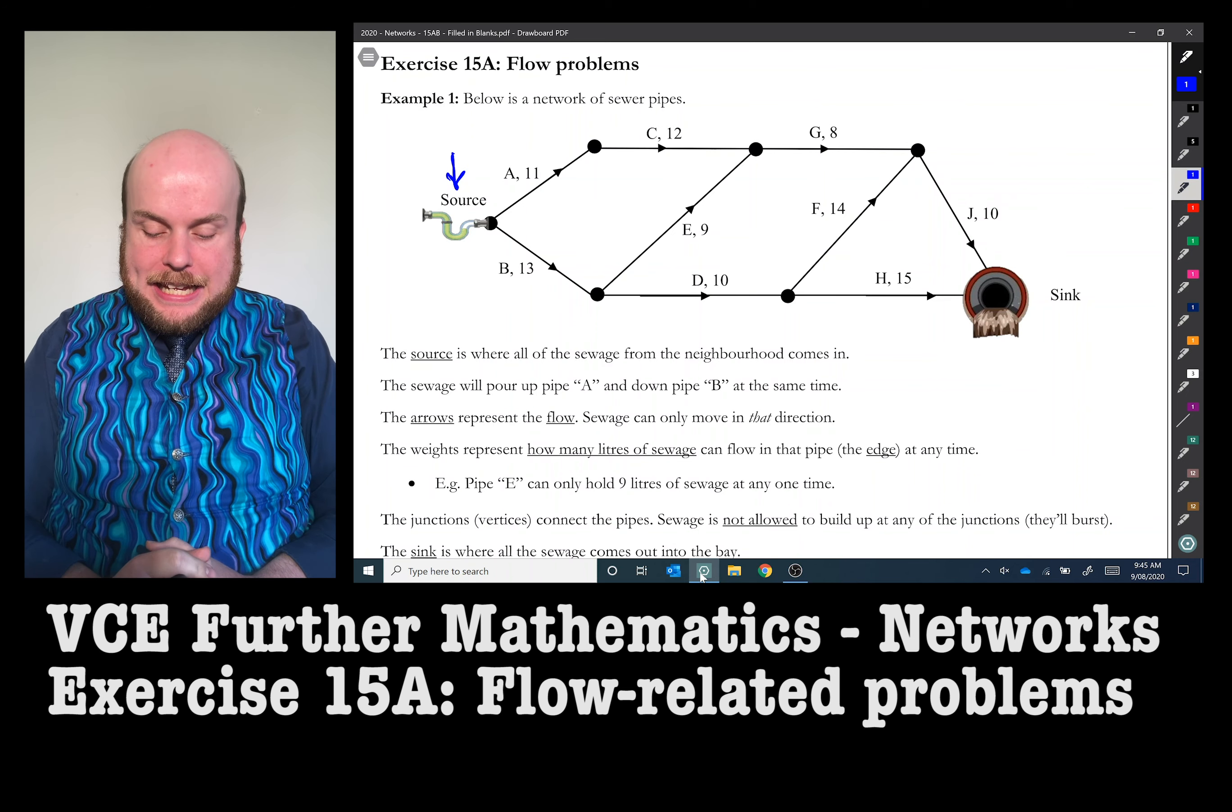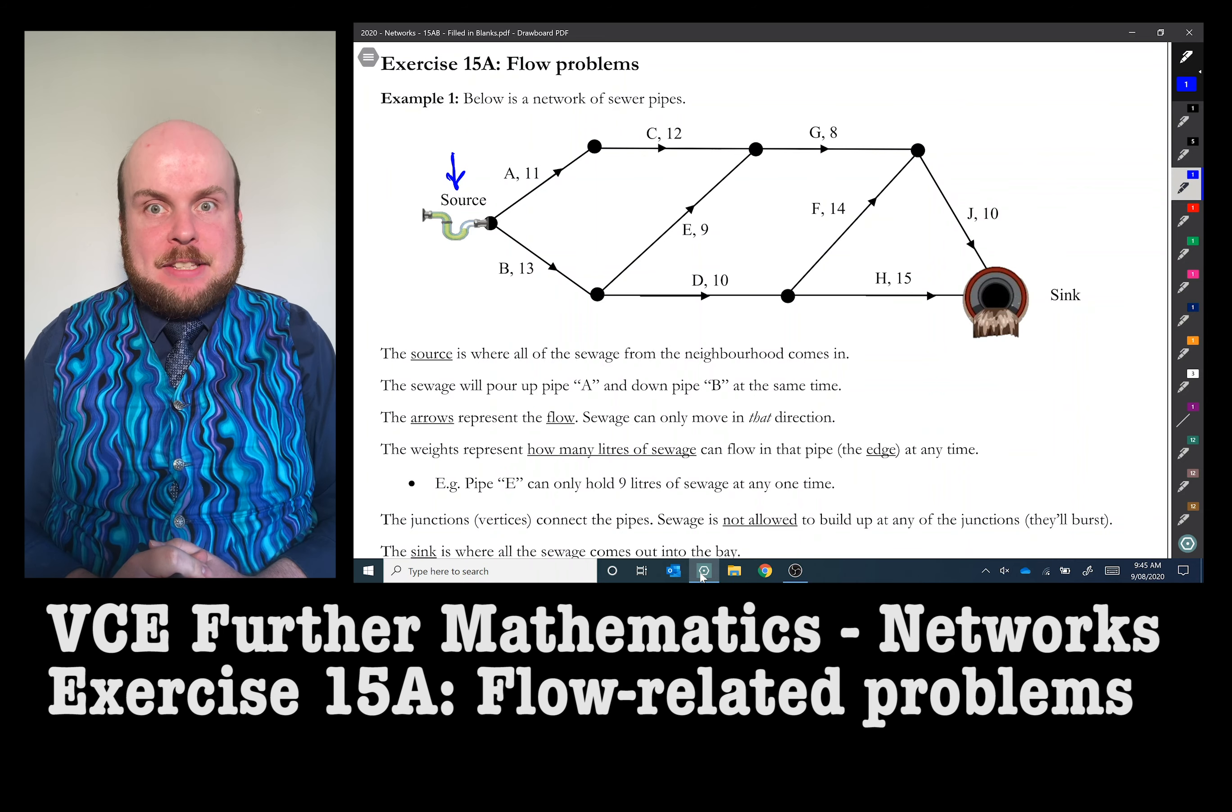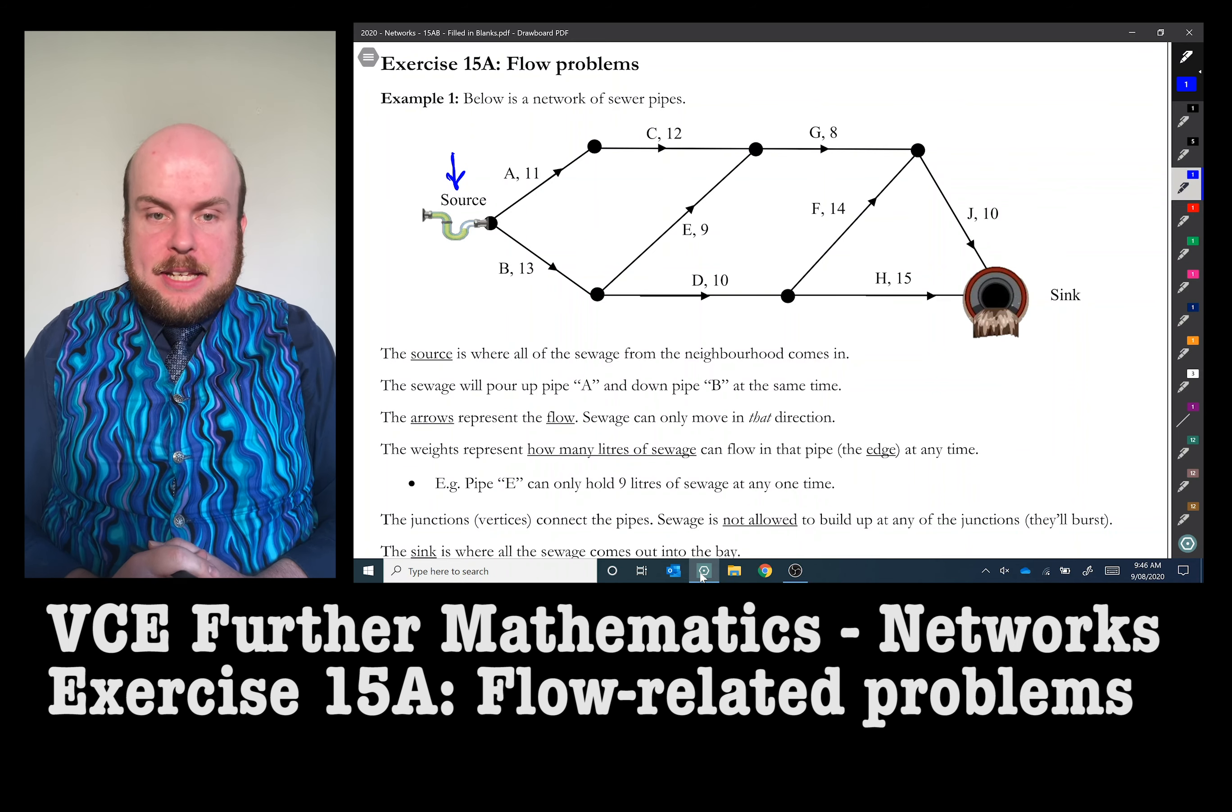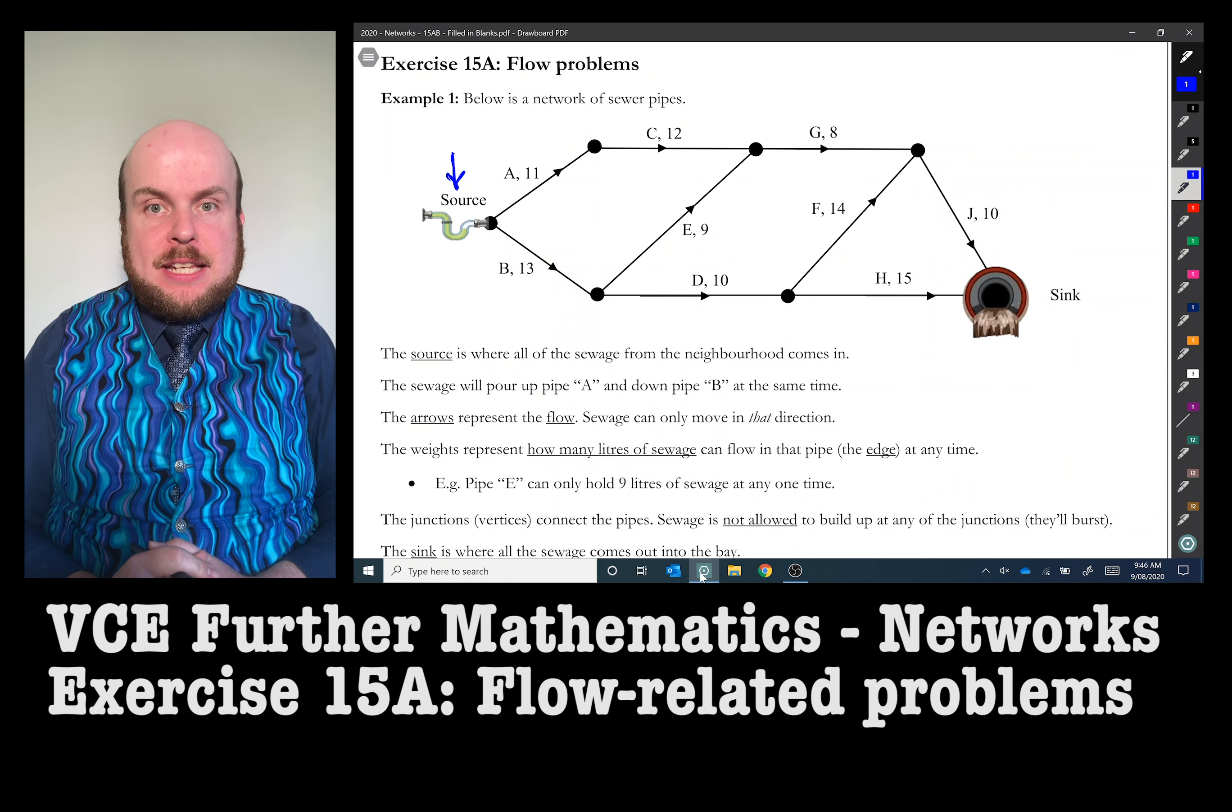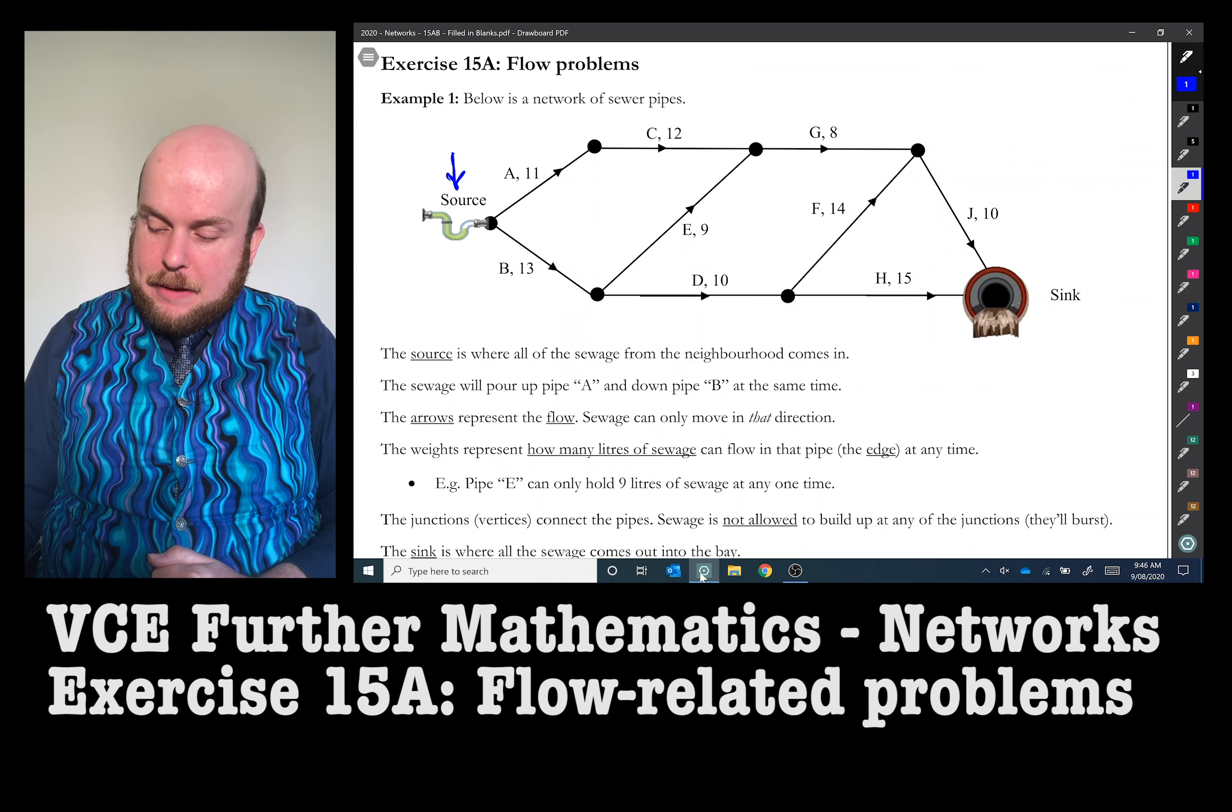So pipe E can only hold nine liters of sewage at any one time maximum. Now, the junctions or vertices connect the pipes. Sewage is not allowed to build up at any of those vertices, lest they explode.